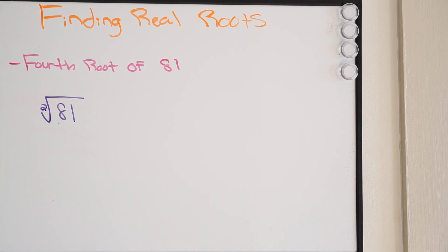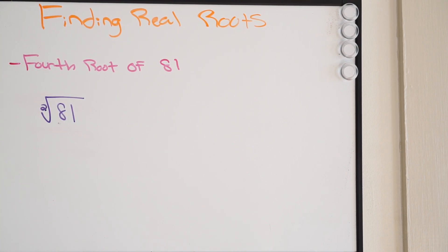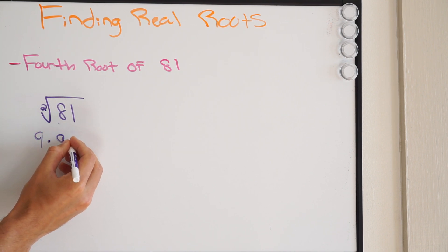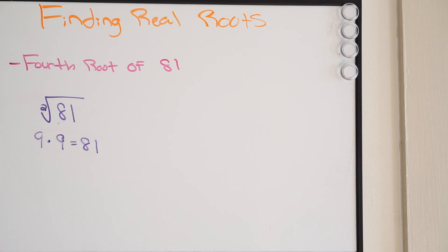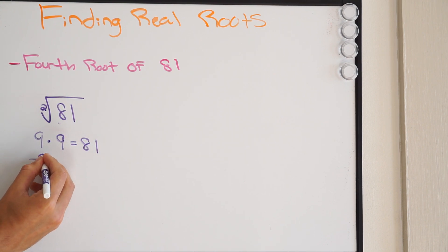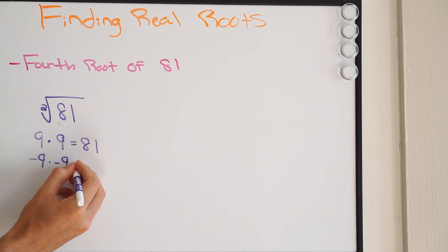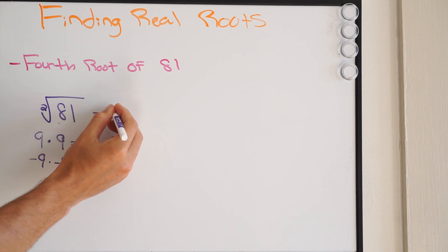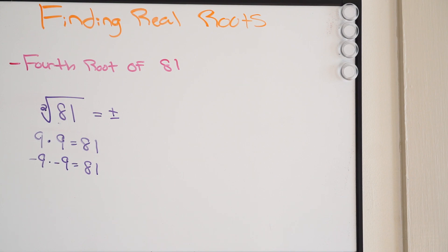What that is saying is a number times itself will give you 81. So we know that this is going to be either 9 times 9, because that would be 81, or negative 9 times negative 9, which will also be 81. This is why we always write plus or minus when dealing with square root — so plus or minus 9.